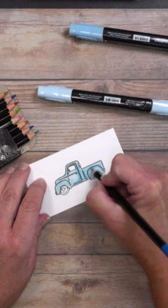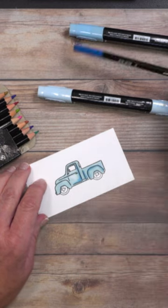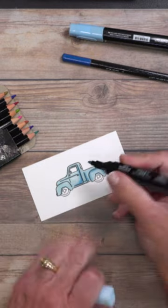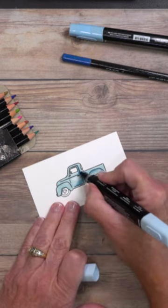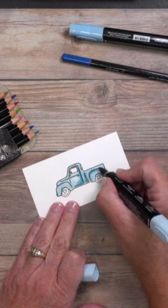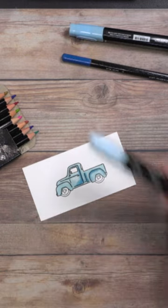Now, once this is done, you can leave it the way it is, or you can go back over it with your light alcohol-based markers and just slightly blend those colors together. It won't move them a whole lot, but it's going to create some muted tones.